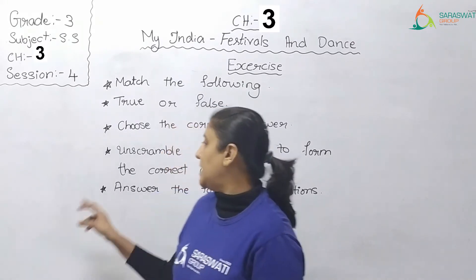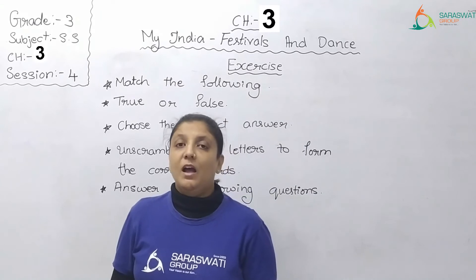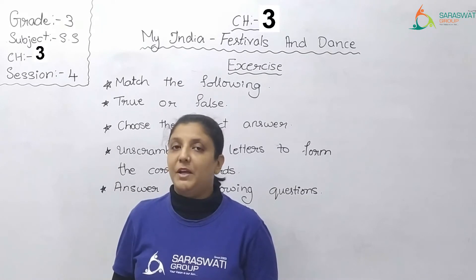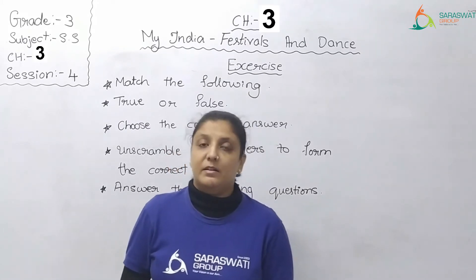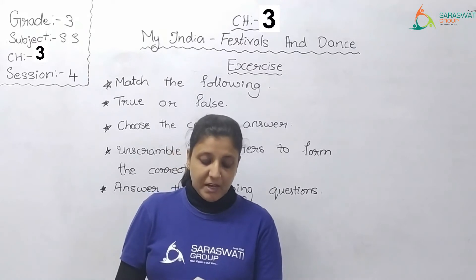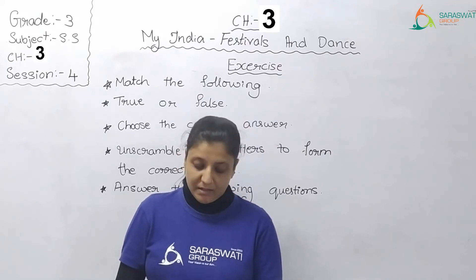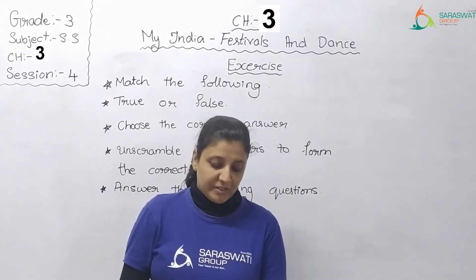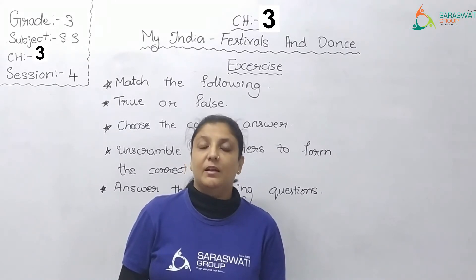Now let's move on to the next main question: Unscramble the letters to form the correct words. You are given some statements and their answers are in jumbled letters. Rearrange those jumbled letters to find the correct answers. A. A Sikh festival — answer is Gurpurab. B. A festival in Kerala — answer is Onam.